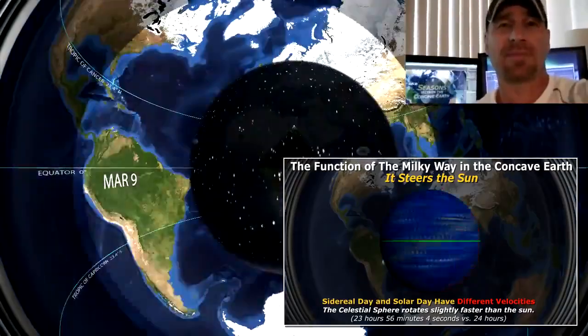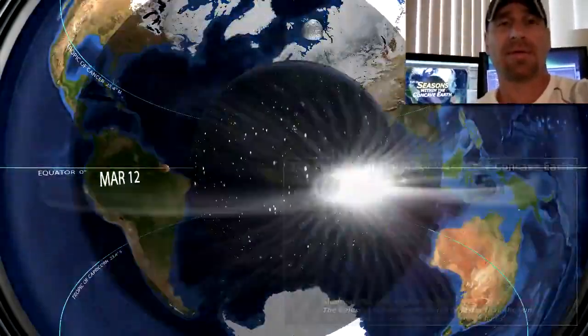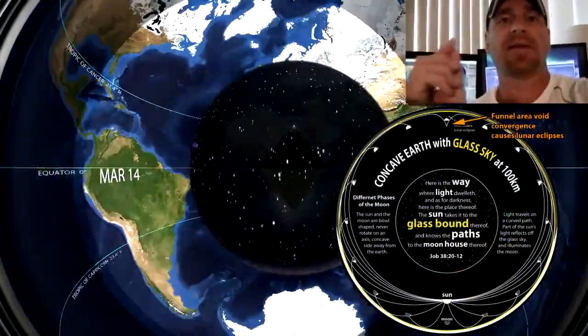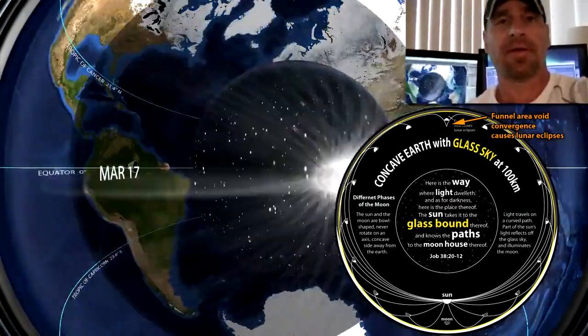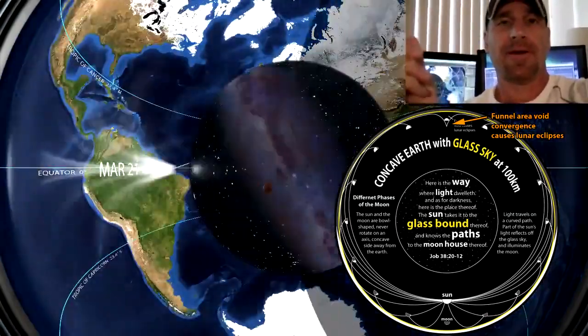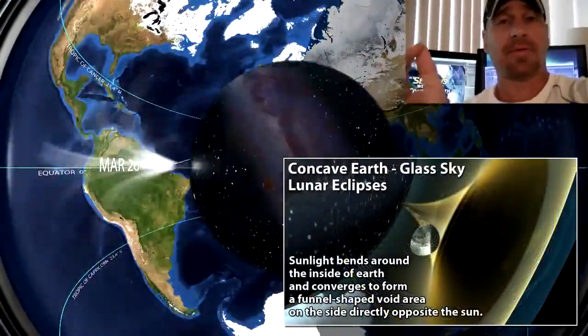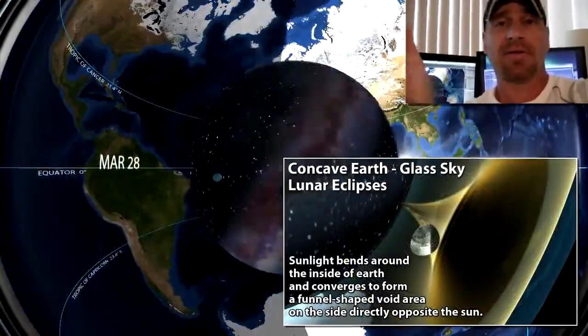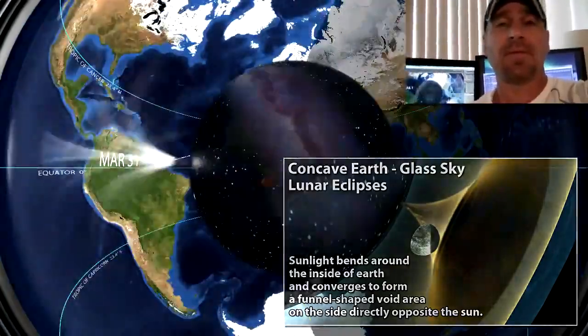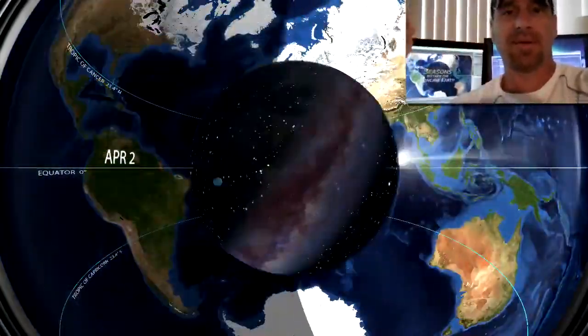Everything works within the concave Earth. Sunlight is bending around the inside of the Earth, that's how we get lunar eclipses. There's an opposite funnel-shaped void area opposite the Sun. When the moon goes through that void area it gets eclipsed, or if they're south of that void area it's just simply going to be a full moon.